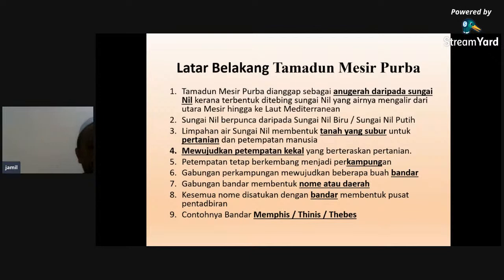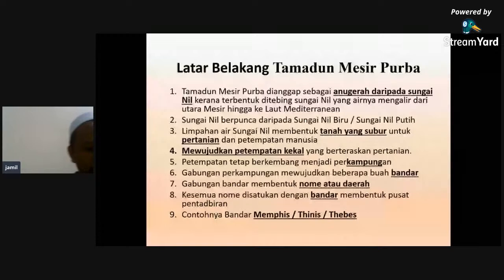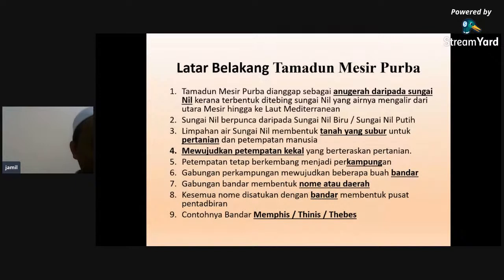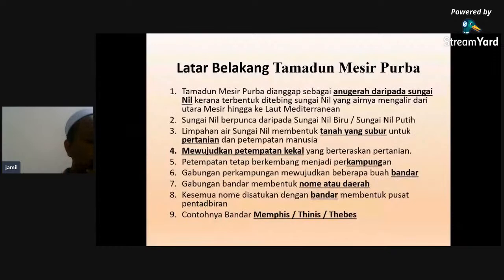Cuba bagitahu apa empat perkara wajib dalam latar belakang tamadun? Nabilah Zaini kata sungai - ya bagus. Lepas sungai, Nabilah Zaini kata tanah yang subur, kemudiannya pertanian. Aino Matiyah kata sungai, tanah subur, aktiviti pertanian dan pertempatan kekal - bagus. Hafizah kata sungai, tanah subur, pertanian, pertempatan kekal - ya bagus pandai. Seri Wangsa, Gisca, Adrin Anas, Muna Nasihat semua berkata perkara yang sama - Alhamdulillah, semua dah dapat faham apa latar belakang yang wajib bagi setiap tamadun.